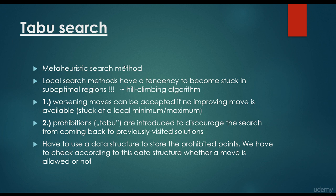So, what is tabu search? It is a meta-heuristic search method. Usually we have well-defined algorithms — for example, how to sort a one-dimensional array of integers, or how to find the shortest path in a directed graph. We have well-defined algorithms: merge sort, quick sort, Dijkstra's algorithm, and so on. A meta-heuristic search method is going to work fine in a general sense.